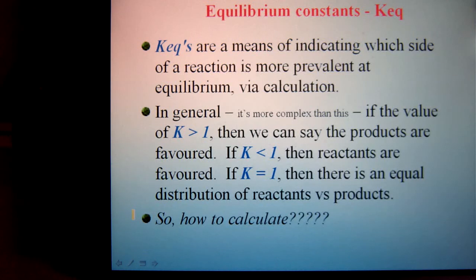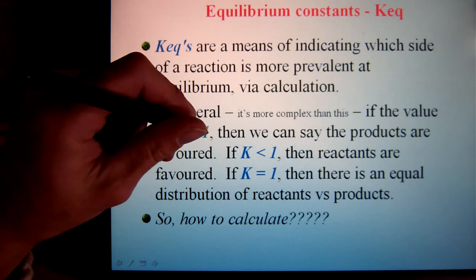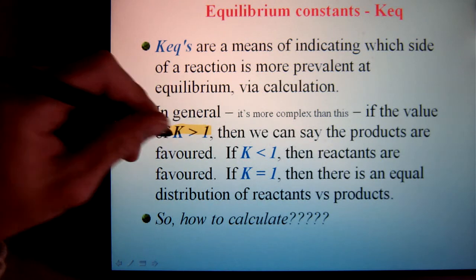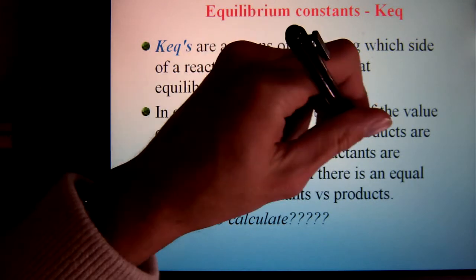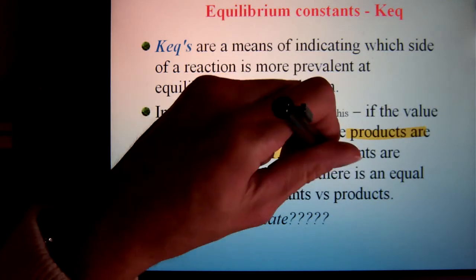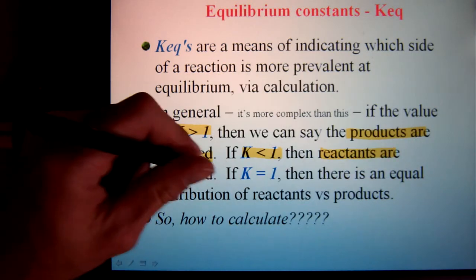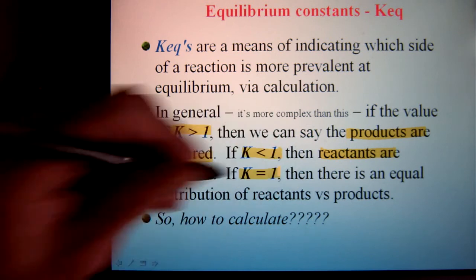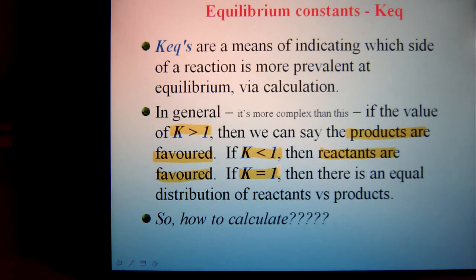Equilibrium constants are a numerical indication of whether the products or reactants are favored in a reaction. Simply put, if the value of the equilibrium constant is greater than 1, then we have more products. If it's less than 1, we have more reactants. If it happens to equal 1, which is very rare, then we have a 50-50 split.